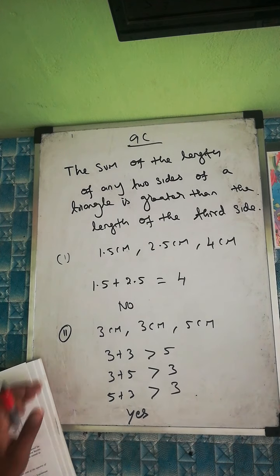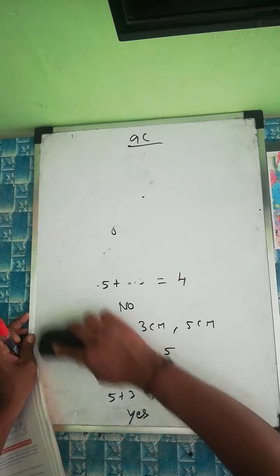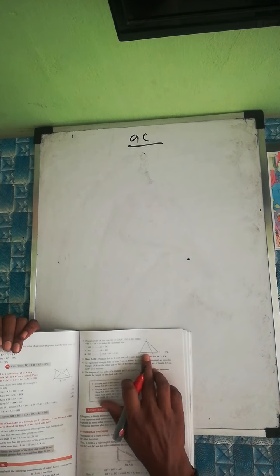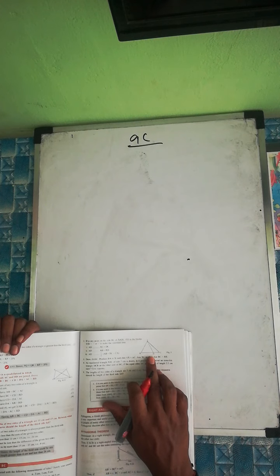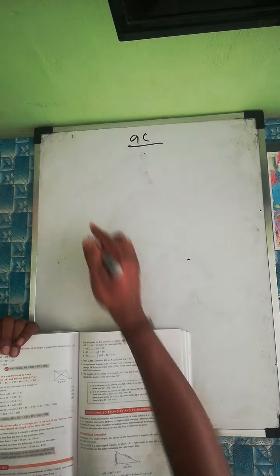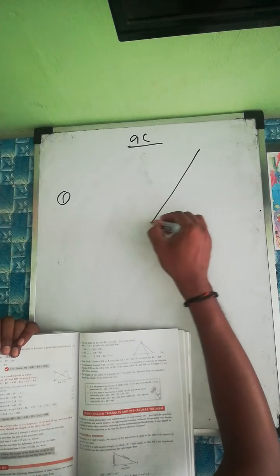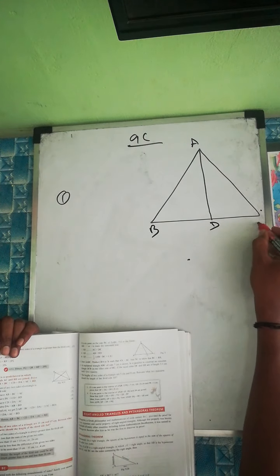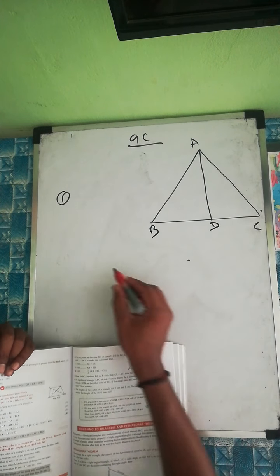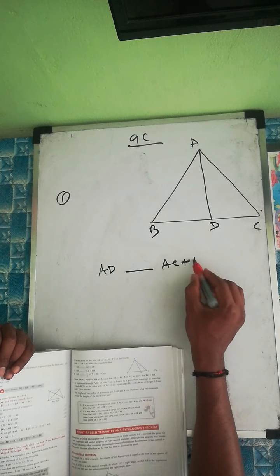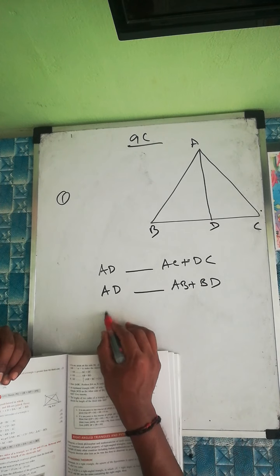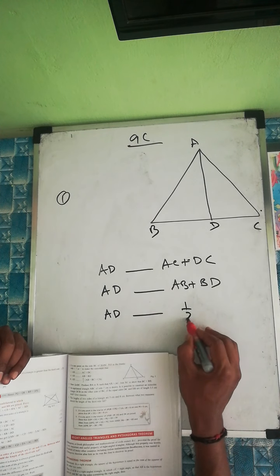Question number two: D is any point on side BC of triangle ABC. Fill in the blanks with greater than, less than, or equal sign. The comparisons to fill are: AD vs. AC + DC, and AD vs. AB + BD, and AD vs. half of AB + BC + AC.